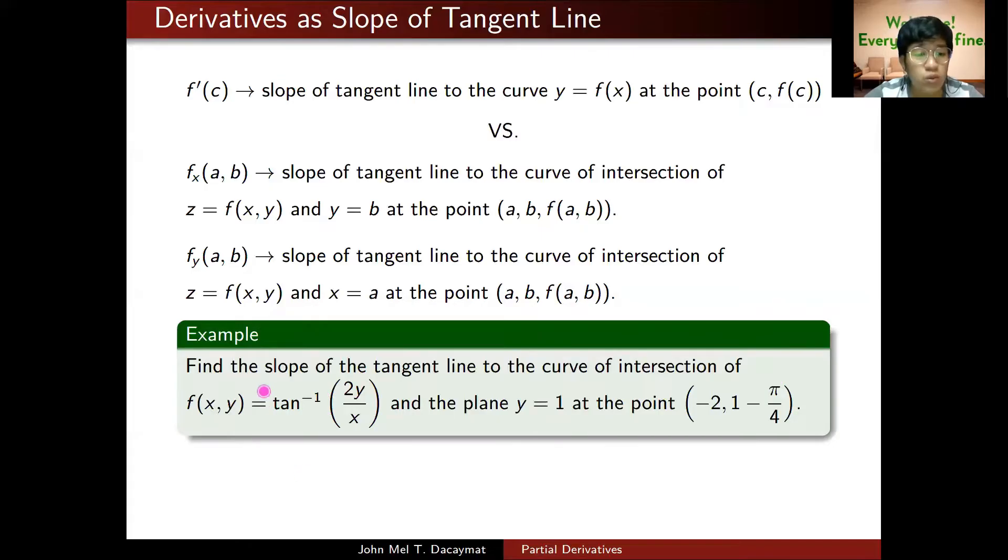So what are we looking for? We want the tangent line to the curve of intersection of the surface and the plane y equals 1. I have fixed y equals 1 because b is 1. So technically, I'm looking for the partial derivative with respect to x at (-2, 1), negative 2 and 1 being my a and b respectively. So this is what I'm looking for. To get that, I'll find f sub x of (x, y), then plug in negative 2, 1 later.